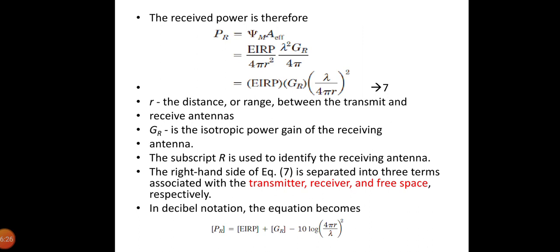The right hand side of this equation is separated into three terms associated with the transmitter, receiver, and free space respectively. You can write that equation as P_R equals EIRP plus G_R minus 10 log(4πr/λ)². EIRP is related to transmitter, G_R is related to receiver, and the 10 log term is related to free space. The received power in dBW is therefore given as the sum of the transmitted EIRP in dBW plus the receiver antenna gain in dB minus the third term which represents the free space loss in dB.